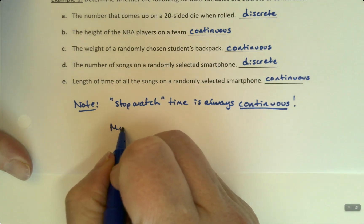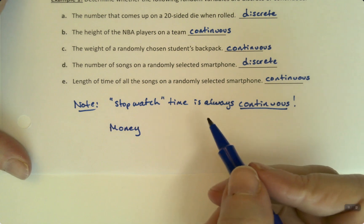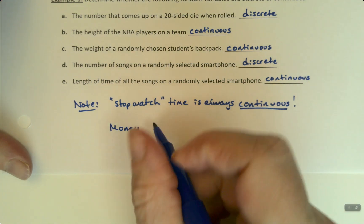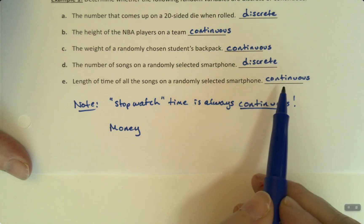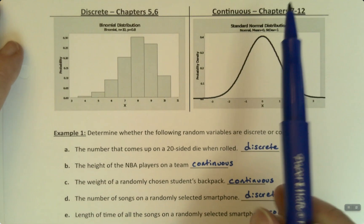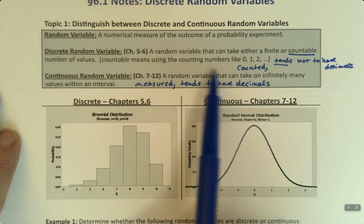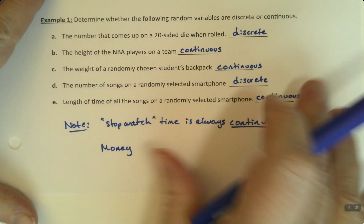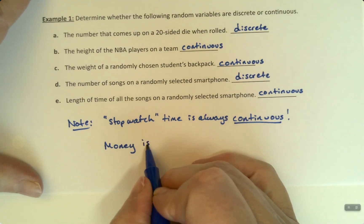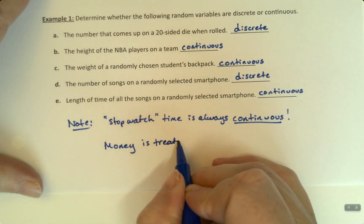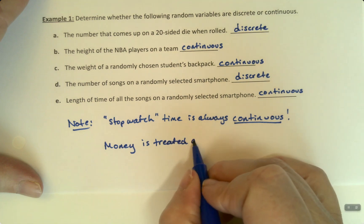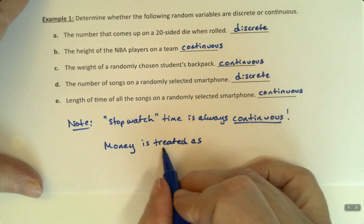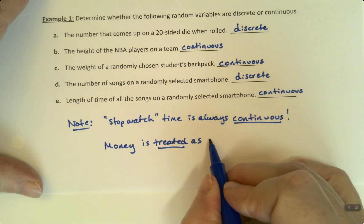Also note, money, in terms of dollars and cents, is technically discrete, but we'll treat it like it's continuous a lot. Because it has two decimal places. And it's very rare for us to have a discrete thing with two decimal places. Money is treated as if it's continuous. It's technically not because it's cut off at the penny, at the hundredths decimal place. But that's a lot of decimals. So, it's treated as continuous.